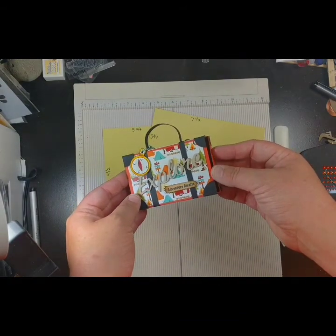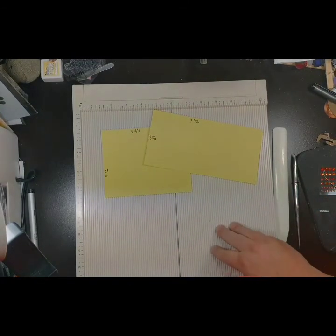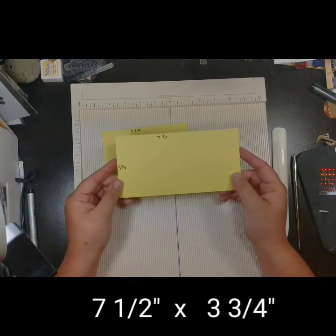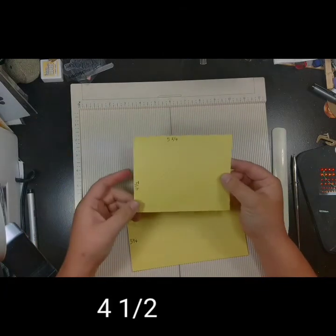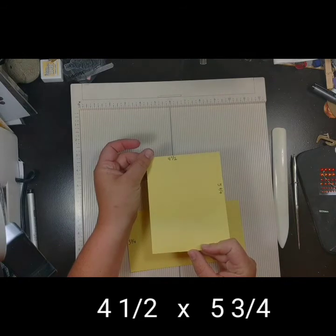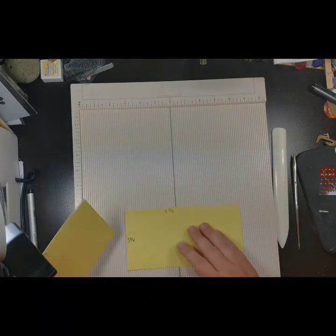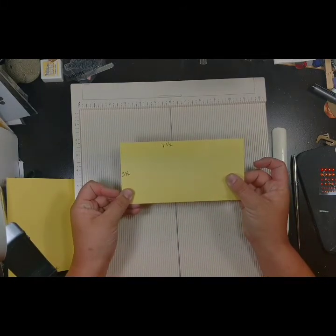To start off with, cut two pieces of cardstock: one that measures seven and a half by three and three-quarter inches, this will be the outer box, and one that measures four and a half by five and three-quarter inches, this will be the inner sliding drawer portion. I was able to get both pieces from one sheet of eight and a half by eleven cardstock in the banana split color included in the kit.